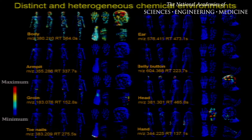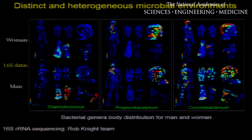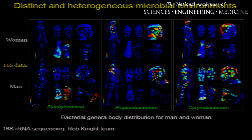Using this strategy, we found that there were distinct and heterogeneous chemical environments on the body of a man and a woman. For example, specific molecules were found in the armpit, groin, or the toenails of the women, and specific molecules were found on the ear, belly button, head, and hand of the man. Similarly, mapping of 16S rRNA revealed distinct and heterogeneous microbial environments.